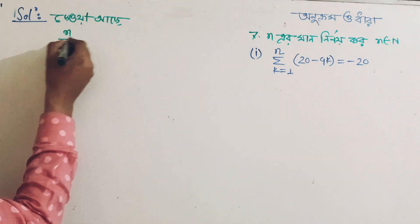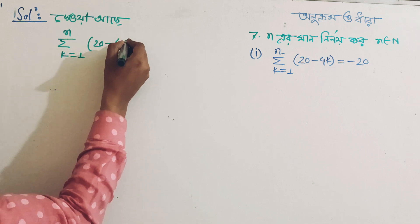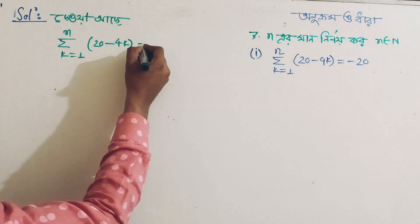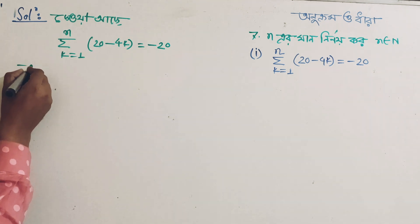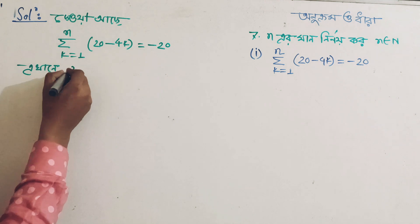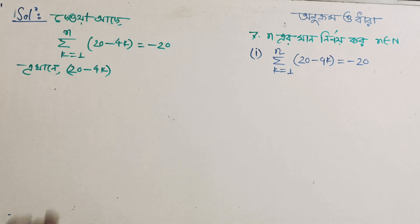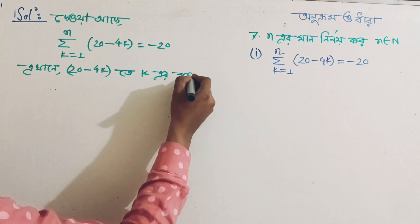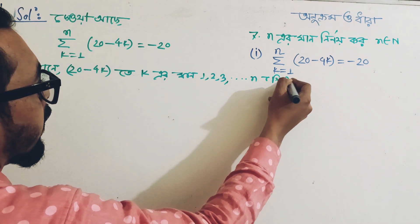This is 8 and a natural number. We have 20 minus 4k, and 20 minus 4k is equal to minus 20. So 20 minus 4k is equal to minus 20, for k = 1, 2, 3, ... n plus 5.